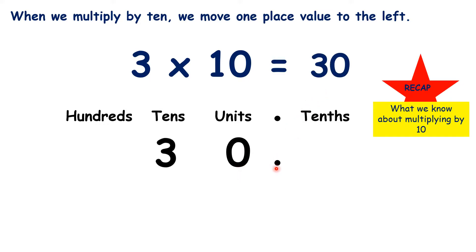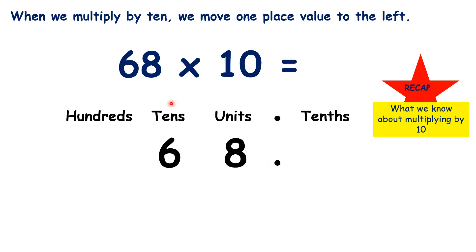So 3 times 10 is 30. And we do the same thing with 68 times 10. We move the digits one place value to the left, write a 0 in our empty units column, and that gives us our answer 680.